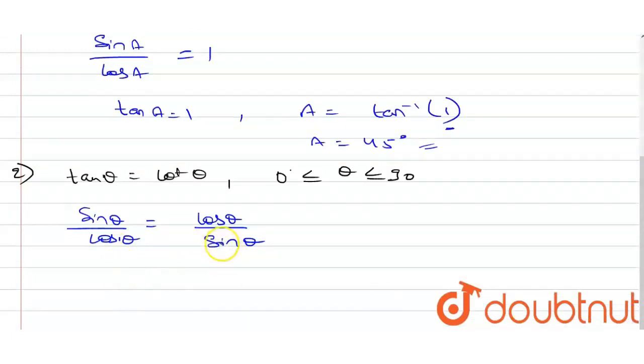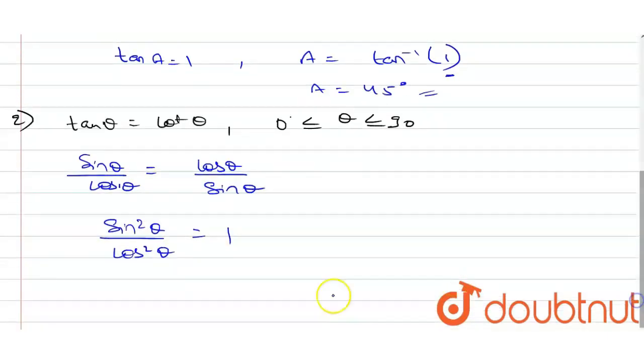Now what we will do, we will take this whole equation on that side. It will become sin square theta upon cos square theta, and this will become 1. We know sin upon cos is tan, so sin square upon cos square will be tan square.